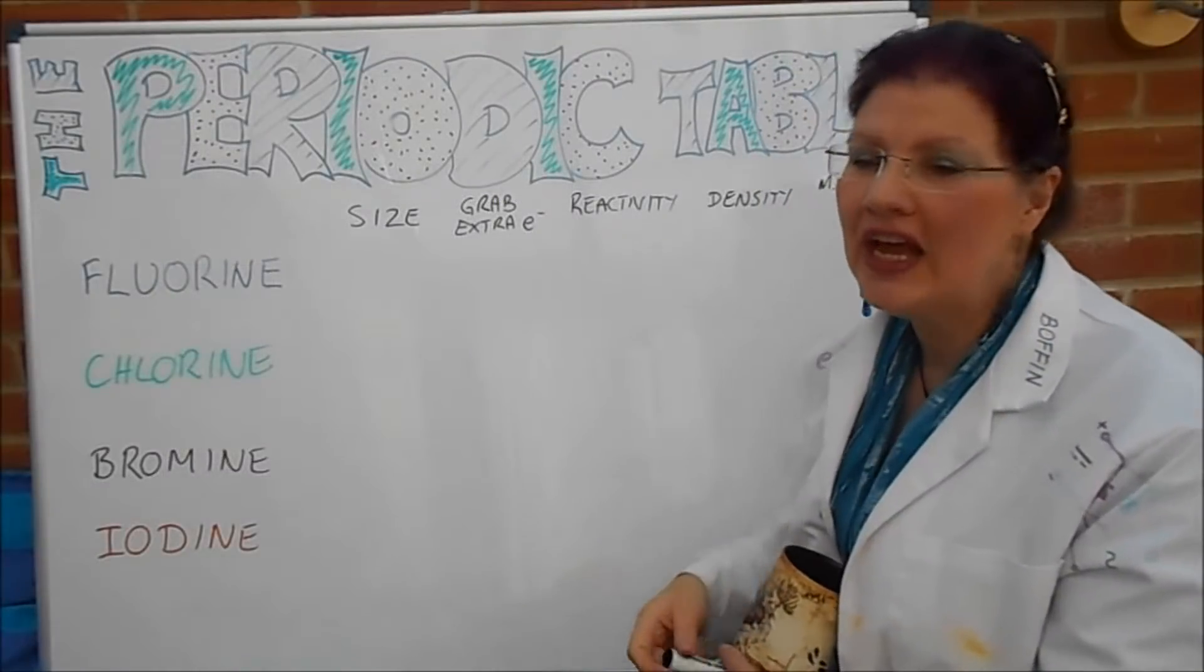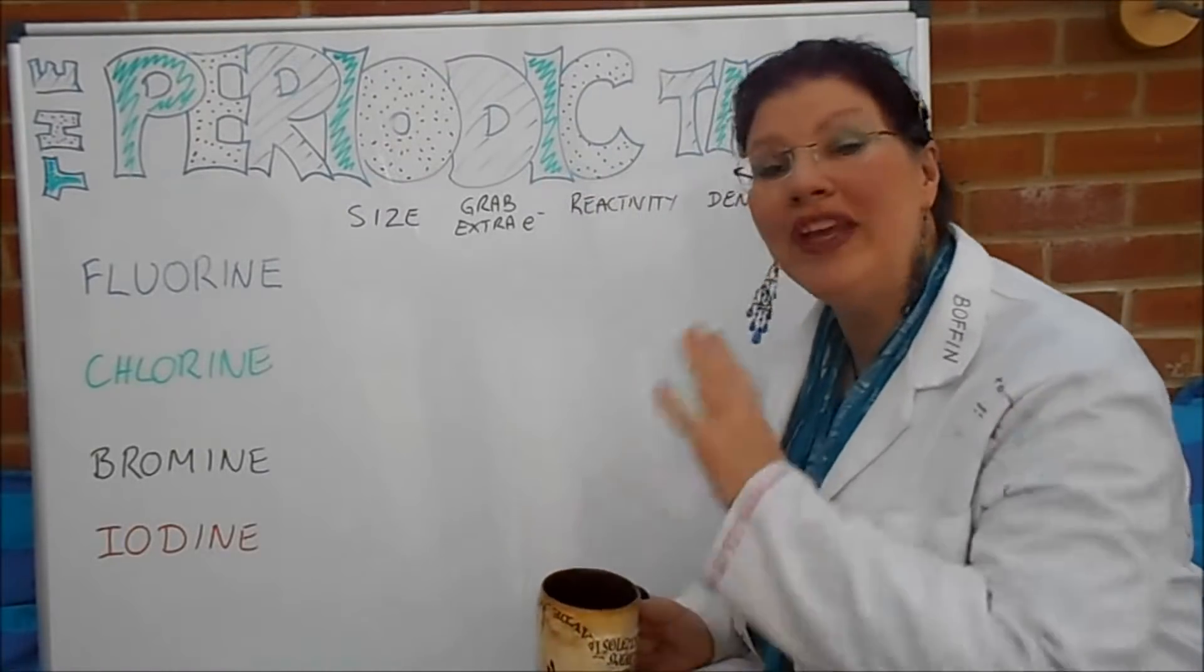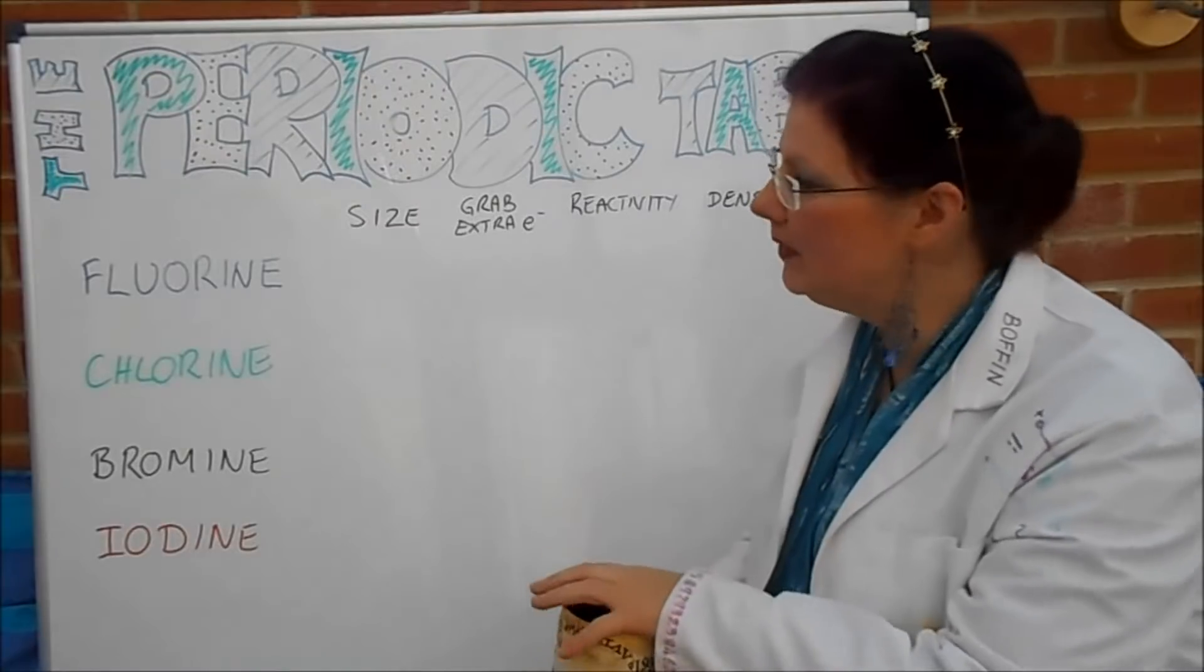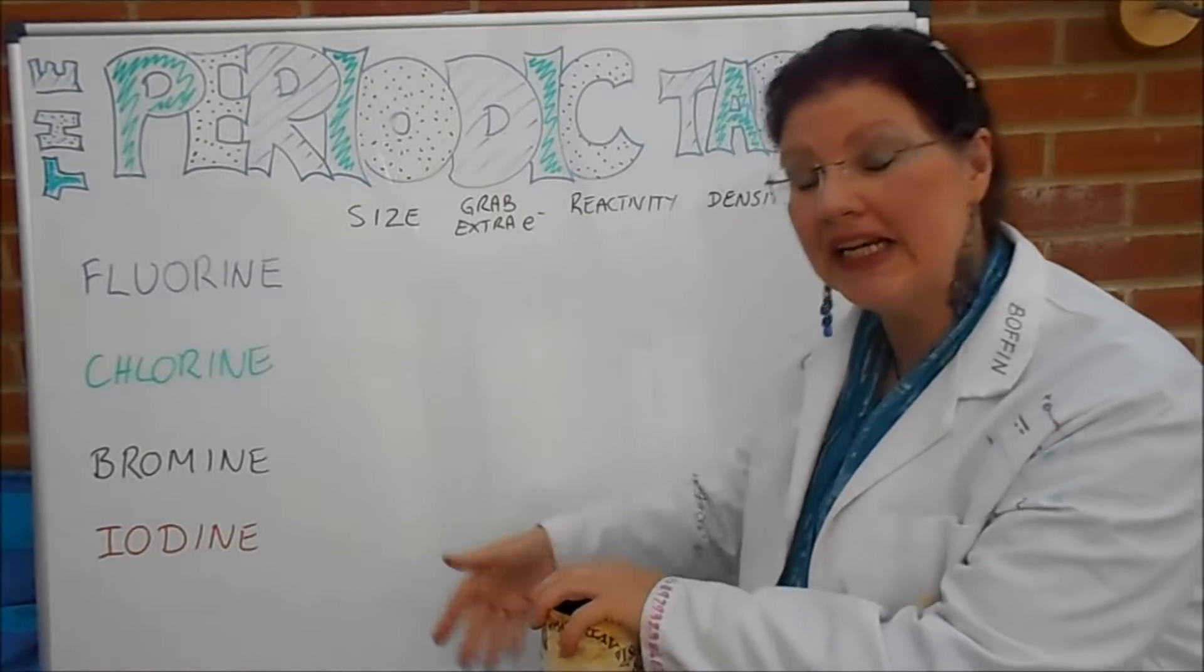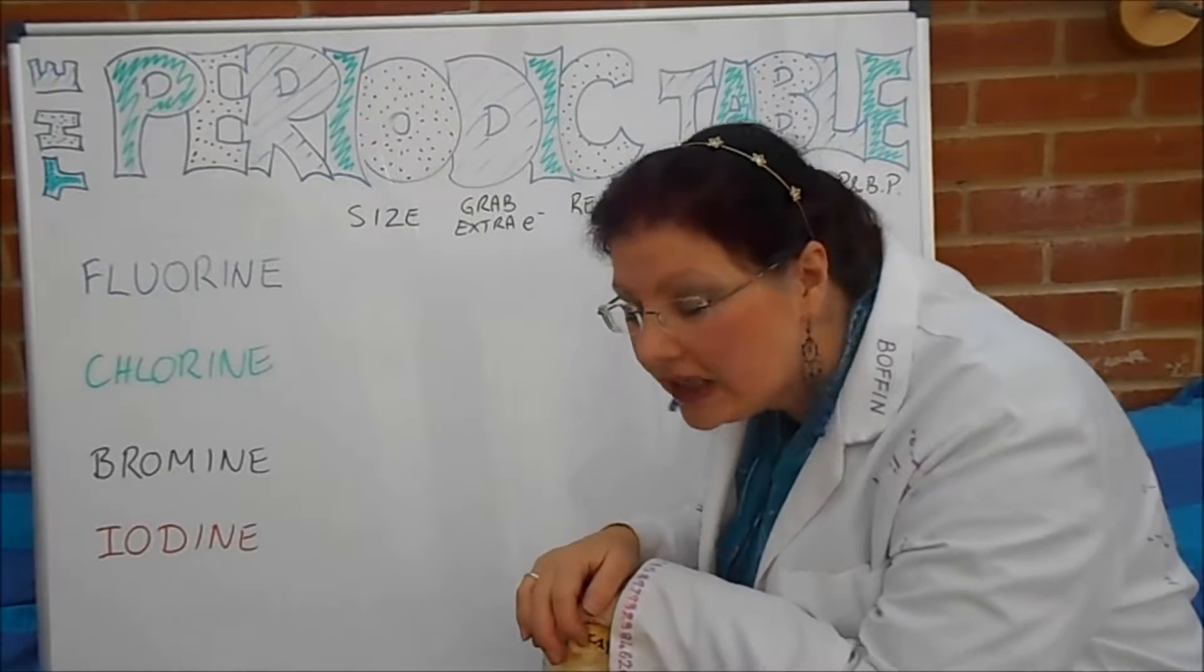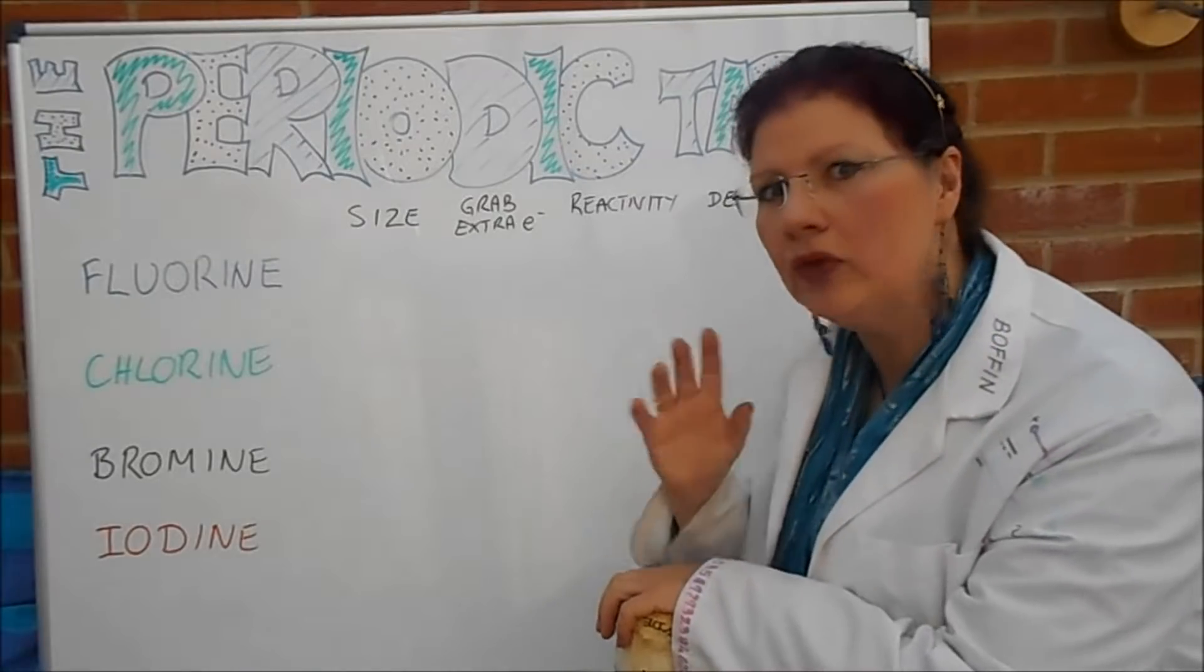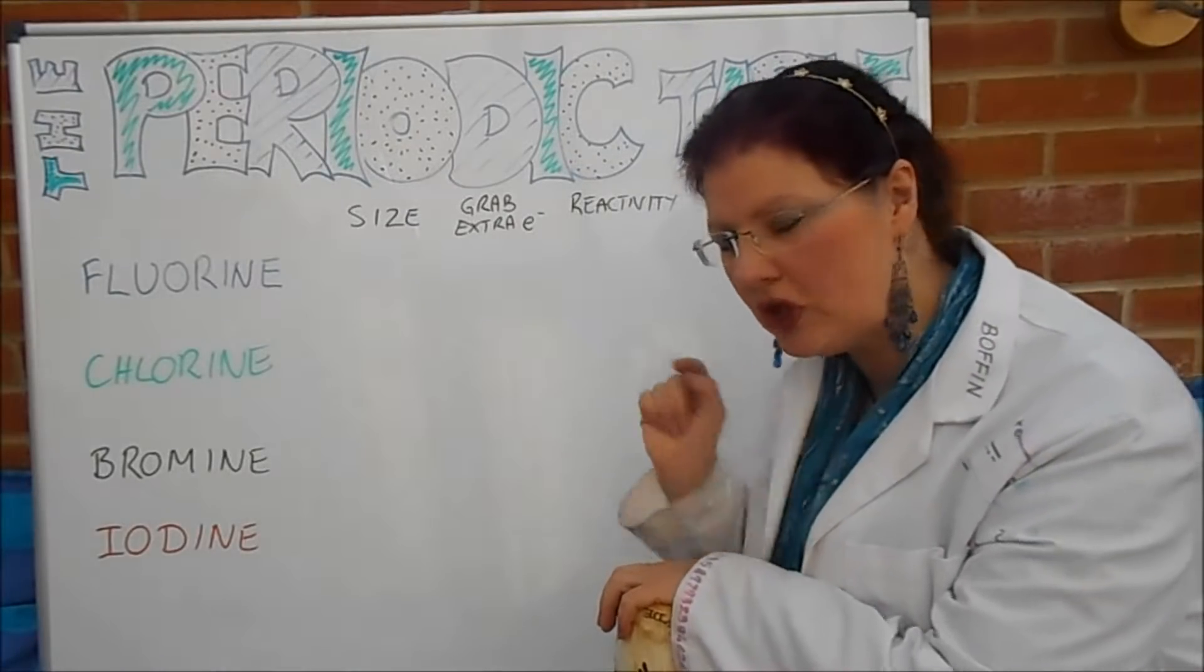Now in earlier videos I talked a lot about the electron structure of the various elements: Fluorine, Chlorine, Bromine and Iodine. There is another one at the bottom but we don't tend to use that one because it's highly radioactive. So I talked about the electron structure and all the bonding, covalent and ionic and all that kind of thing. Check out that one if you want to know more.